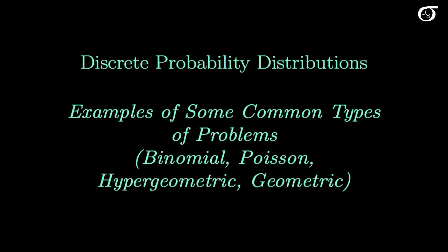Let's look at some examples of common types of problems we run into in discrete probability distributions. I'm going to assume you've already been introduced to the binomial distribution, the Poisson, the hypergeometric, and the geometric, although we can answer geometric type problems based on basic probability rules.